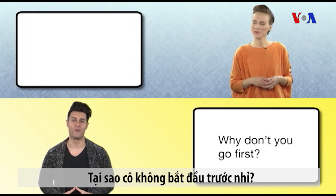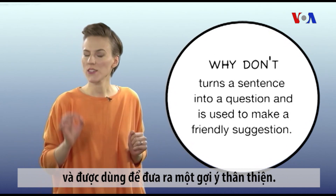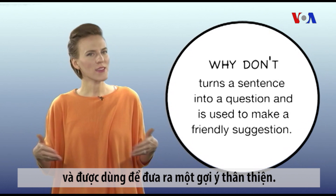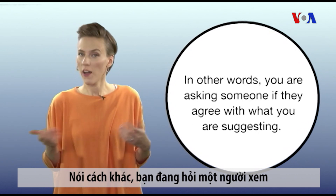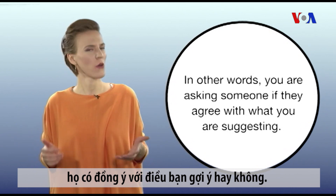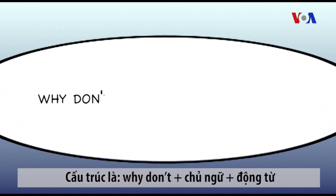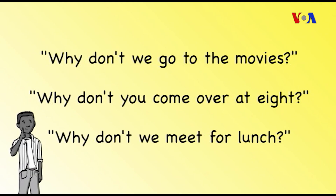Why don't you go first? Why don't turns a sentence into a question and is used to make a friendly suggestion. In other words, you are asking someone if they agree with what you are suggesting. The structure is why don't plus subject plus simple verb form. Why don't we go to the movies? Why don't you come over at 8? Why don't we meet for lunch?